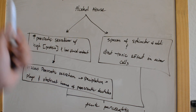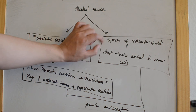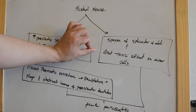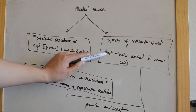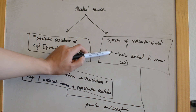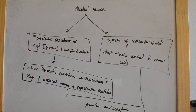Furthermore, alcohol can also cause spasms of the sphincter of Oddi, and it has a direct toxic effect on the acinar cells, which together with the increase in pancreatic secretions of high protein and low fluid content causes acute pancreatitis.